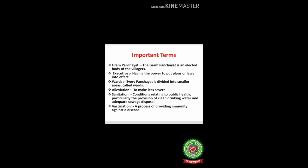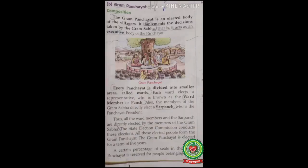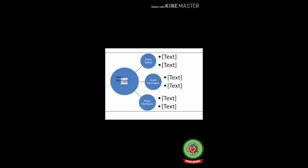Now let's start reading the lesson. Open page number 107, Part B — Gram Panchayat Composition. Have a look at this picture — the gram panchayat is the first tier of the Panchayati Raj system. The gram panchayat is divided into three parts: number one is gram sabha, number two is gram panchayat, and number three is nyay panchayat. In the previous class we read about gram sabha.